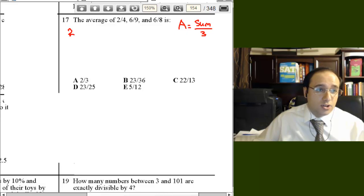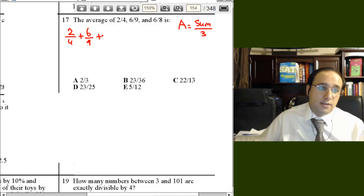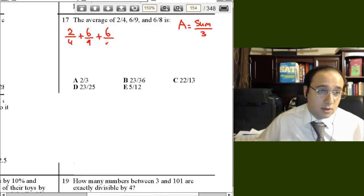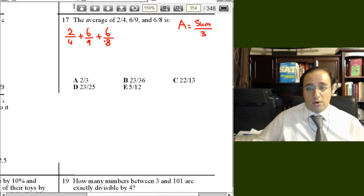Now let's add 2 over 4, 6 over 9, and 6 over 8. Now you can find the LCM or LCD right away, or you can simplify first.